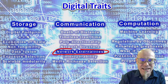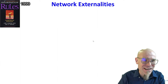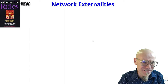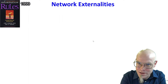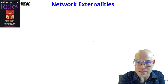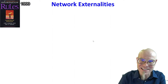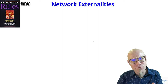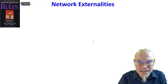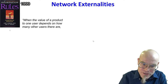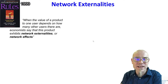Networks can also have externalities. This goes back to a very influential book from 1999 — 'Information Rules' — by Shapiro and Varian, professors at UC Berkeley. Varian later moved on and became the architect behind Google's marketing system. This book told us earlier on about some traits of digital information, and one of the most important is network externalities and how influential they are. When the value of a product to one user depends on how many other users there are, economists say that product exhibits network externalities or network effects.